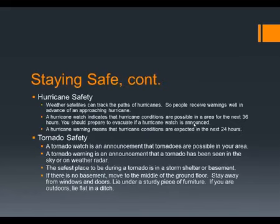For hurricane safety, the prediction of hurricane tracks is becoming better and better, so people typically receive warnings well in advance. A hurricane watch indicates that a hurricane is possible within the next 36 hours — you should prepare to evacuate. A hurricane warning means that hurricane conditions are expected within the next 24 hours.